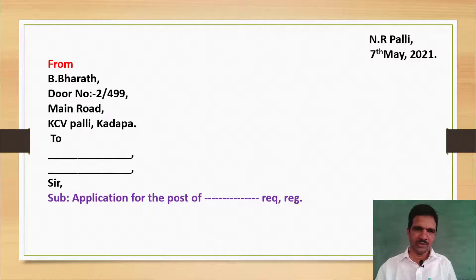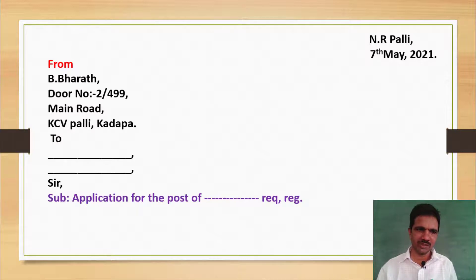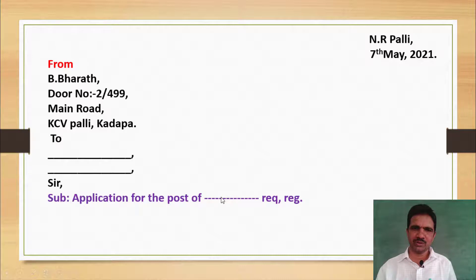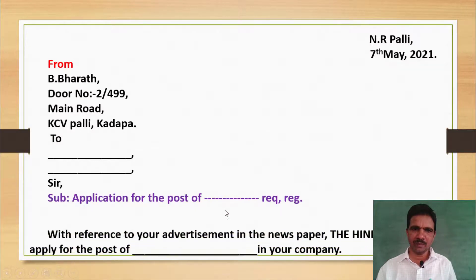Since Bharat is going to write a letter for a job, the subject is mentioned very clearly here: 'Application for the post of [blank]' regarding the request. In that blank, the post that Bharat is going to apply for should be mentioned.